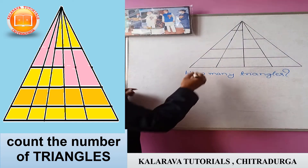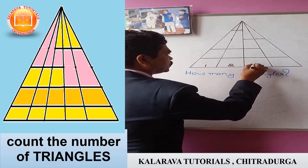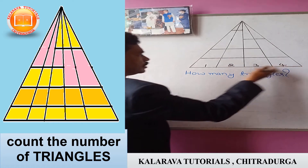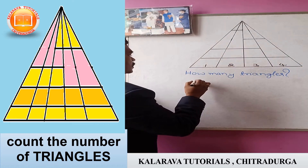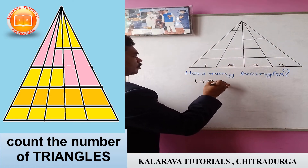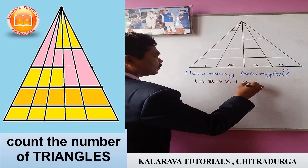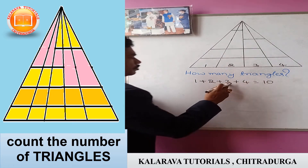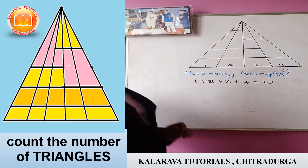In the first line, you count the numbers: 1, 2, 3, 4. So in the base of the triangle, there are four numbers. You have to add this: 1 plus 2 plus 3 plus 4. That gives you 10.